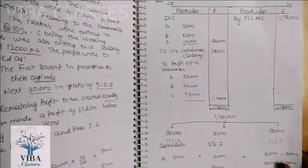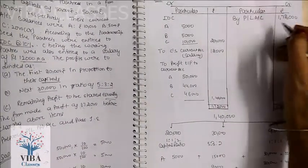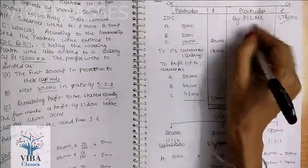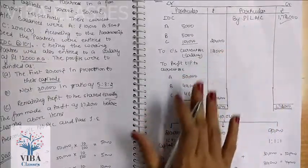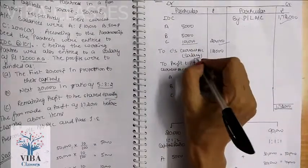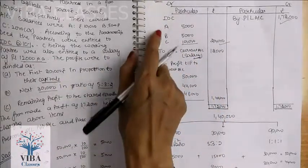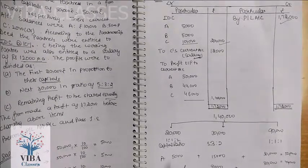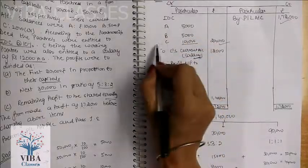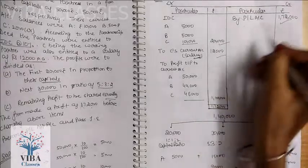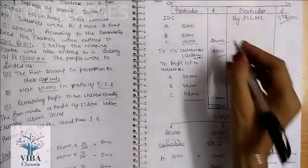Now make the P&L Appropriation account. On the credit side, write the profit transferred from P&L account. On the debit side, give interest on capital of Rs. 20,000 total — credited to A's, B's, and C's current accounts, not capital accounts, since capital is fixed. Also give C a salary of Rs. 12,000, credited to C's current account. After salary and IOC of Rs. 32,000 are appropriated from Rs. 1,72,000, the remaining divisible profit is Rs. 1,40,000.